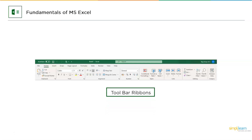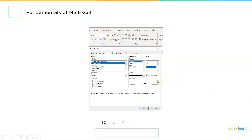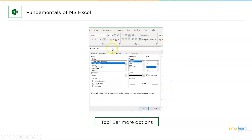The ribbon is segmented into groups. For example, the first group includes Paste, Cut, Copy, and Format Painter. The second group covers font, font size, Bold, Italic, Underline, and text alignment. Each group has separate functions. There's also a small arrow option in some groups — when a group can't fit all its operations, clicking this arrow opens a dialog box with additional options.